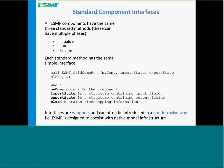ESMF components have three standard phases: initialize, run, and finalize. Each method has the same interface — basically a pointer to the component, the fields in, the fields out, and a clock. This is something that a very broad community of modelers has come to understand as something that works under many circumstances and can support really very complex systems. The interfaces are wrappers, and they can be introduced in a non-intrusive way, meaning the model code inside — the code that scientists see — usually doesn't need to change very much. ESMF is designed to co-exist with native model infrastructure.